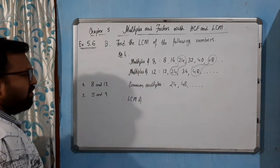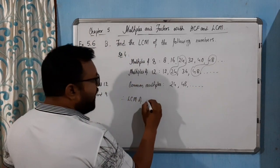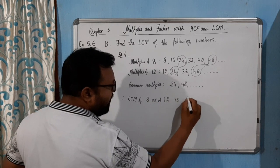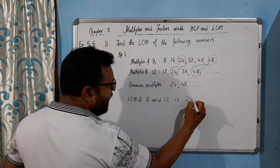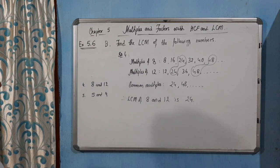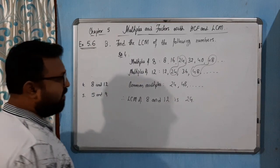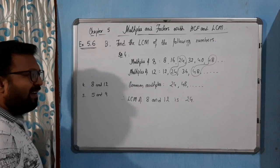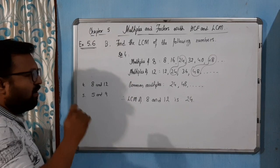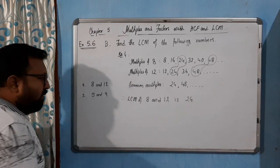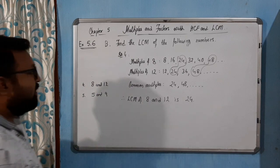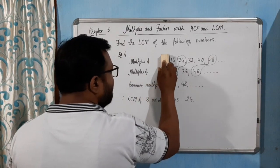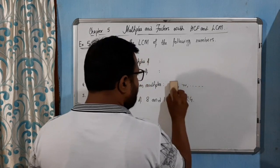So the common multiples are twenty-four, forty-eight, and so on. The LCM of eight and twelve is twenty-four, because it is the lowest common multiple. Now come to the last example of this question.